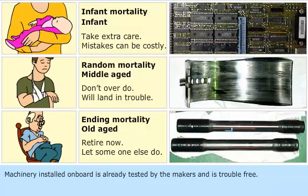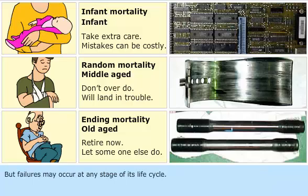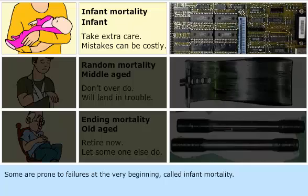Machinery installed on-board is already tested by the makers and is trouble-free, but failures may occur at any stage of its life cycle. Some are prone to failures at the very beginning, called infant mortality. The examples for this are newly designed electrical and electronic items.